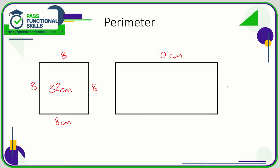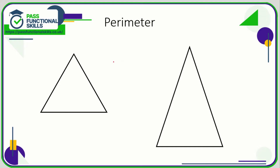With a rectangle, they might give you one side as 10 centimeters and another as five centimeters. In a rectangle, opposite sides are equal, so this side is also going to be 10 and this side will be five. So the perimeter is going to be 10 plus 5 plus 10 plus 5, which gives 30 centimeters.